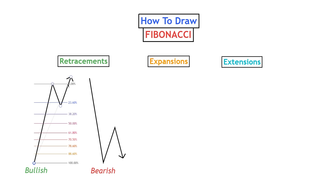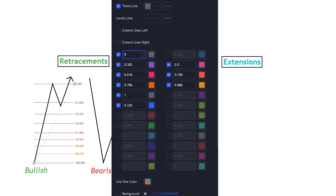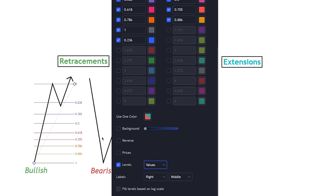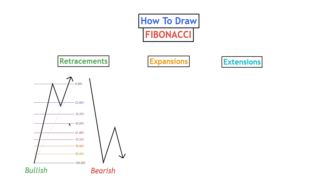Hopefully you have these levels on, and if you don't you can turn them on in the settings. You can decide whether to have Fibonacci decimal points or percentages — I personally like to have the percentages on. Now that we have this measured, we can see that as price retraced in this example we passed the 23.6 Fibonacci level but didn't reach the 38.2 level, so we can estimate that price retraced about 25 to 27 percent compared to the impulsive move.